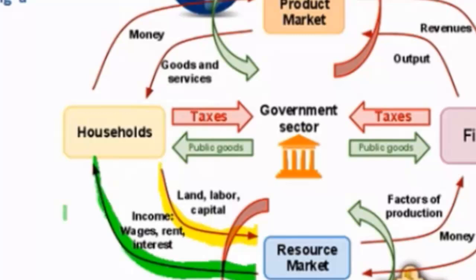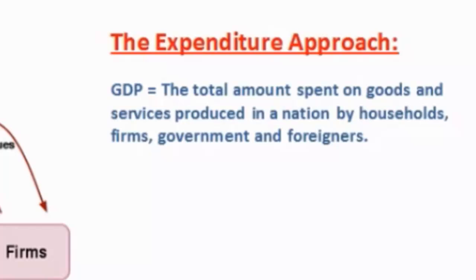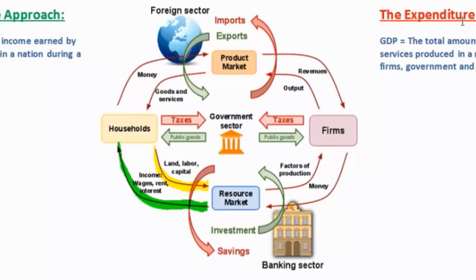Before we get into the income approach, let's define the other way that GDP can be measured. Another way to measure gross domestic product is by finding the total amount spent on the goods and services produced in a nation by households, firms, the government, and foreigners. This is known as the expenditure approach. Expenditure is another way of saying spending; therefore, the expenditure approach measures the total amount spent on a nation's goods and services.